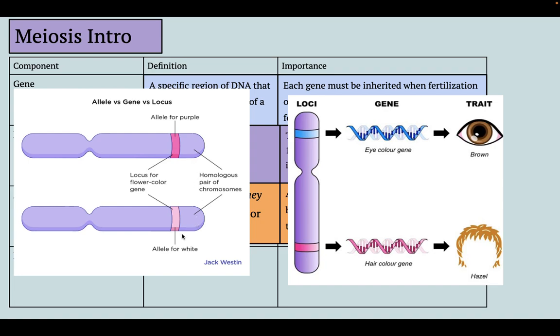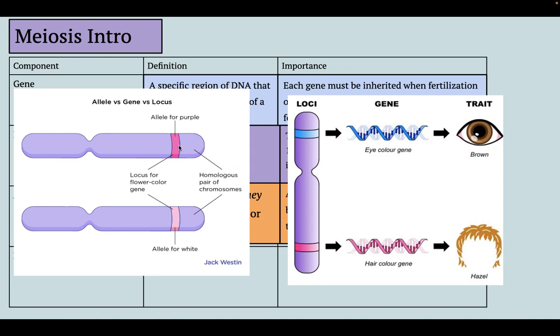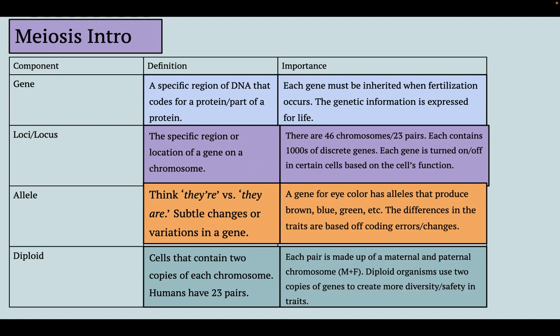We're diploid — all of our cells contain two copies of each chromosome. Humans have 23 pairs, which is why we have 46 chromosomes. Each pair is made up of mom and dad's DNA, and we use those two copies for diversity in traits, safety in traits, having a backup copy, and making variations within a trait. It allows organisms in each generation to express some level of individuality within phenotypes or physical characteristics.